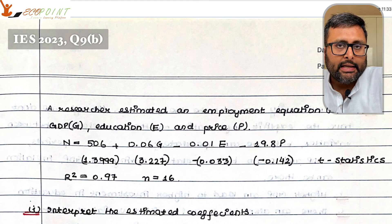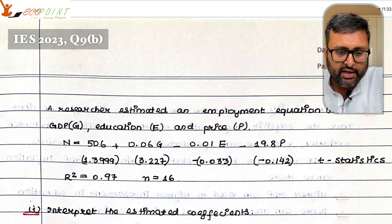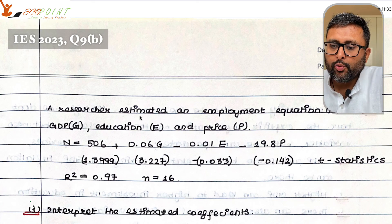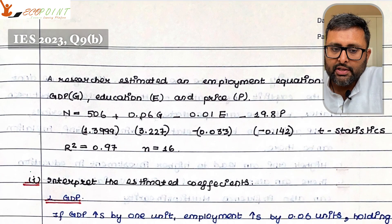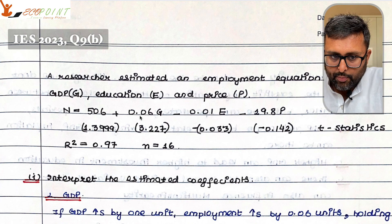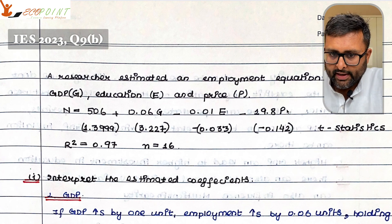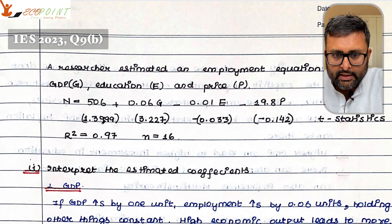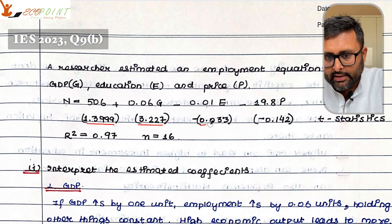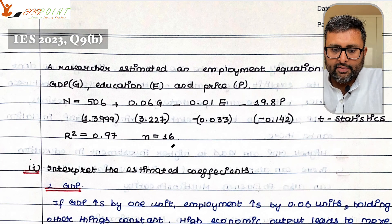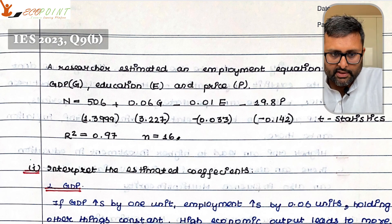Let us do one question which was asked in IES paper 2023, question 9b. A researcher estimated an employment equation N with GDP G, education E, and price P. Employment is regressed upon GDP, education, and price. You are given the T-statistics — these numbers written here are the T-statistics. The unadjusted R-square is 0.97 and N is 16.